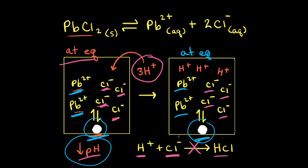Whenever an anion is an extremely weak base, like the chloride anion, we say it is an anion of negligible basicity. The solubility of salts with anions of negligible basicity is unaffected by changes in pH.